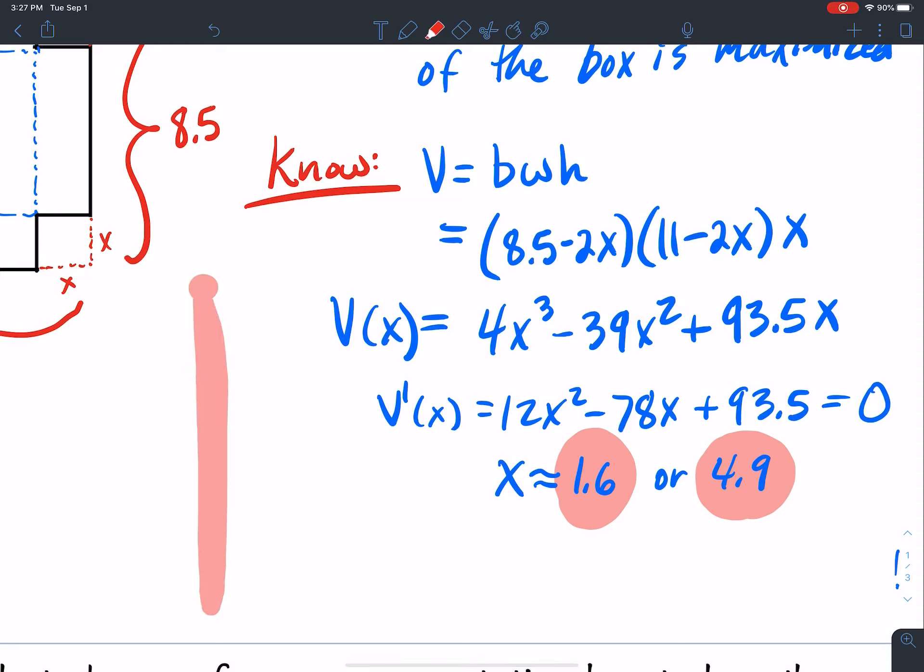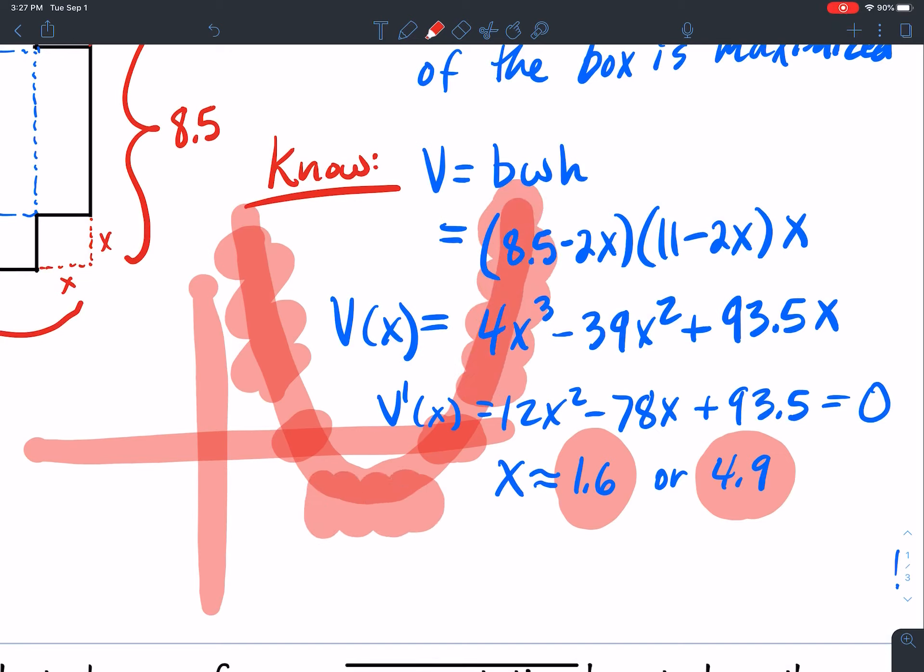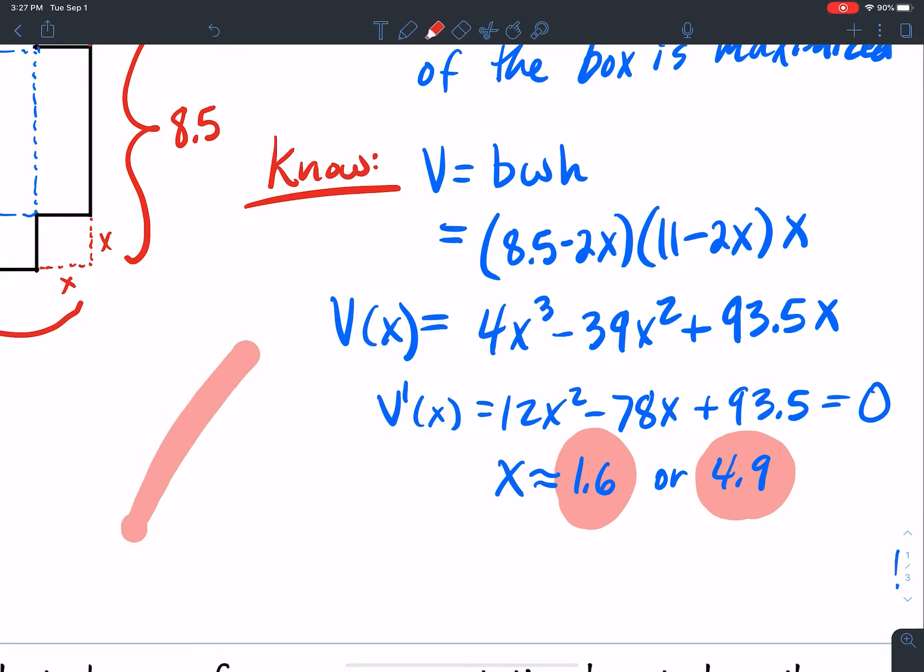So this parabola has a solution here and a solution here. The derivative is positive in some places, it's negative in others, and then it's positive. So we're going from an increasing function to a decreasing function to another increasing function. It's a cubic.